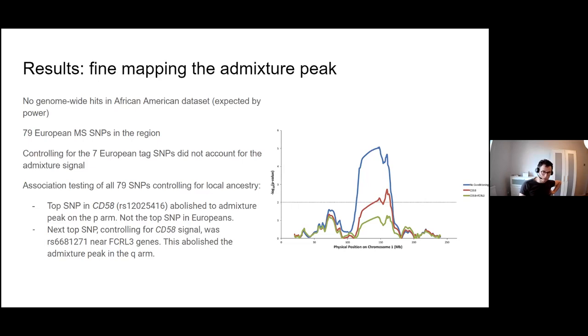What is this telling you? It's telling you that using information from admixed individuals, from African-American individuals, allows you to zone in more carefully on what are likely to be the true causal variants in the region. Probably the reason that these are different SNPs from Europeans is because the linkage structures are very different. The linkage disequilibrium tagged by these two variants is generally much smaller than in Europeans. This emphasizes the amazing value of studying people from admixed ancestries.